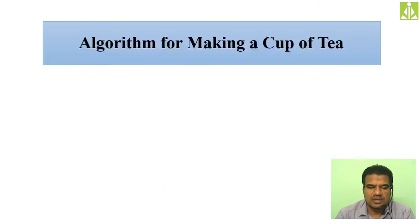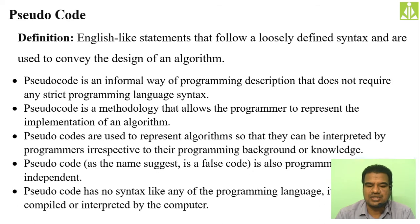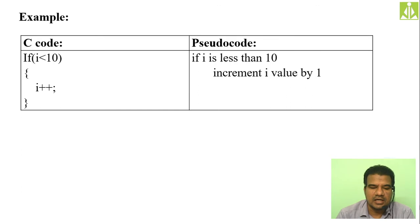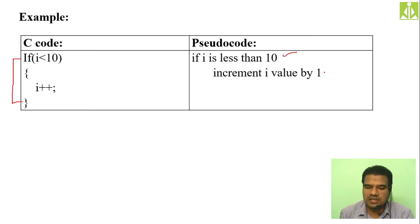All these things — examples of algorithms and pseudo code, the advantages, the definition — everything we discussed in our previous session, so I'm not repeating that. When you have C code, without knowledge of C language it is very difficult to understand. But when you read the pseudo code for that code, the respective pseudo code on the right-hand side gives you the description and information about that C code.